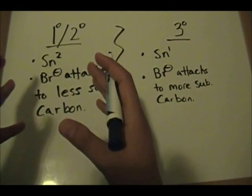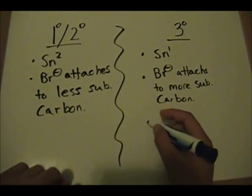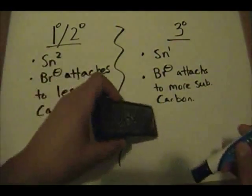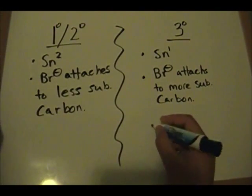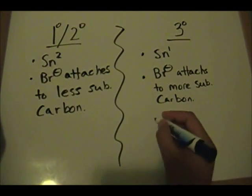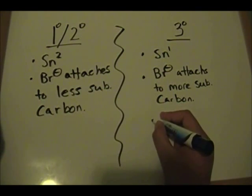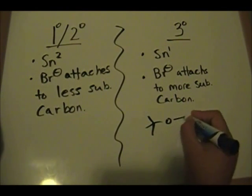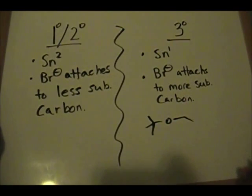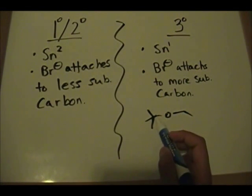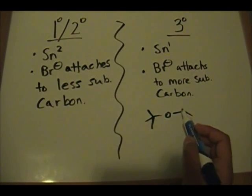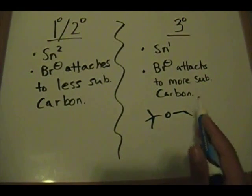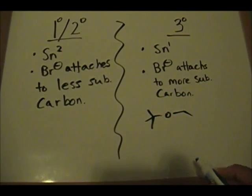Go about doing the reaction as I showed you in the previous parts. Some examples you'll see for tertiary: if you have an ether where this carbon is tertiary and this carbon is primary, it will still follow a tertiary style of reaction mechanism — SN1 — with Br attaching to the more substituted carbon.